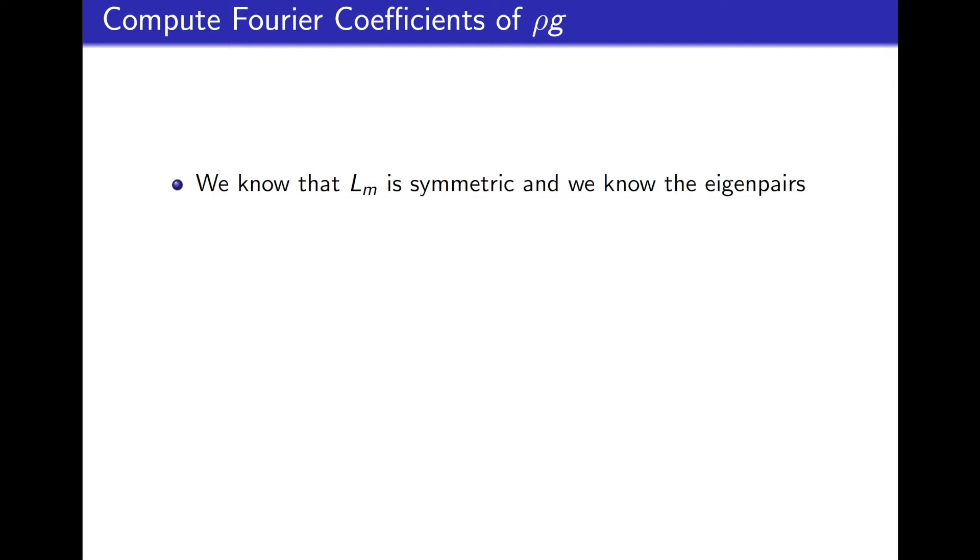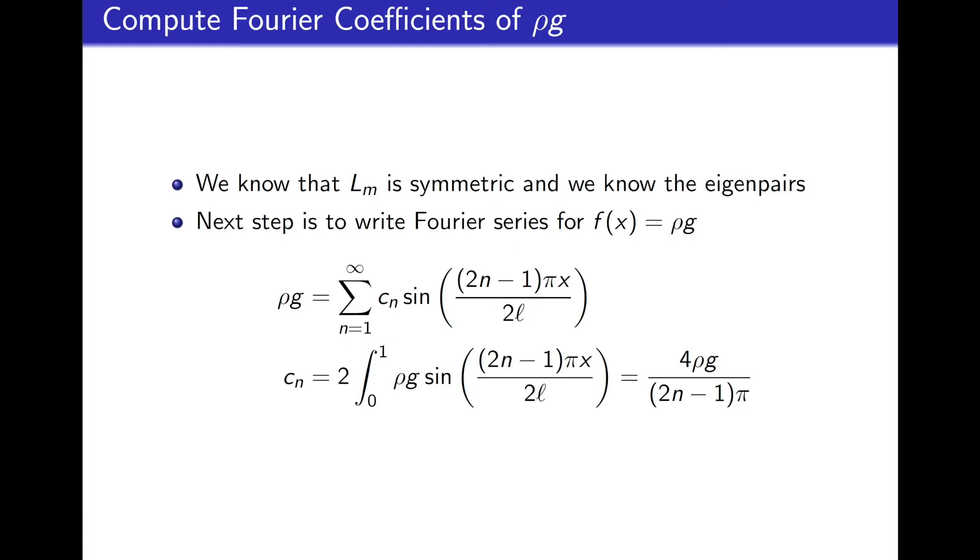The first two steps to solving any boundary value problem is to prove that the operator is symmetric and then compute the eigenpairs, and we have already done that for this problem. The next step is to compute the Fourier coefficients of the right-hand side f(x). When doing this, we need to be sure to use the eigenvectors in the Fourier series. So the series itself will look different for each problem since different eigenfunctions or eigenvectors will be used.